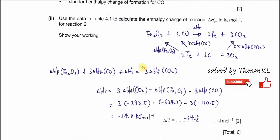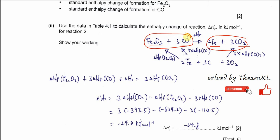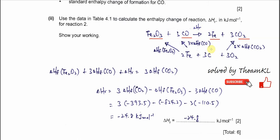For part two, use the data in table 4.1 to calculate the enthalpy change of reaction. The reaction is iron(III) oxide with carbon monoxide forming iron and CO₂. The coefficients are very important for the calculation. To make it fast, you can use the sum of enthalpy changes of formation of products minus reactants. It is better to use a Hess's cycle first so you can understand better.